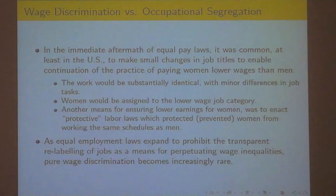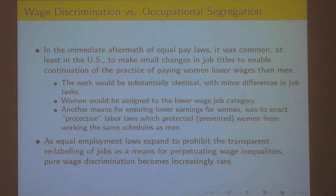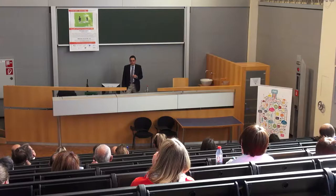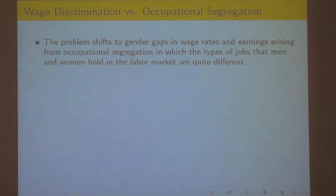So then equal employment laws take a very careful look at job labeling, making it more difficult to just juggle titles. Now you have to have men and women doing substantially different work. That's how we end up with what was called men's work and women's work — occupations that are fairly distinct, with men in the higher-paying ones and women in the lower-paying ones. It's an example of discrimination, but it's not wage discrimination because it's not the same work. Pure wage discrimination, I argue, is fairly rare, and the problem shifts to gender gaps in earnings from occupational segregation.